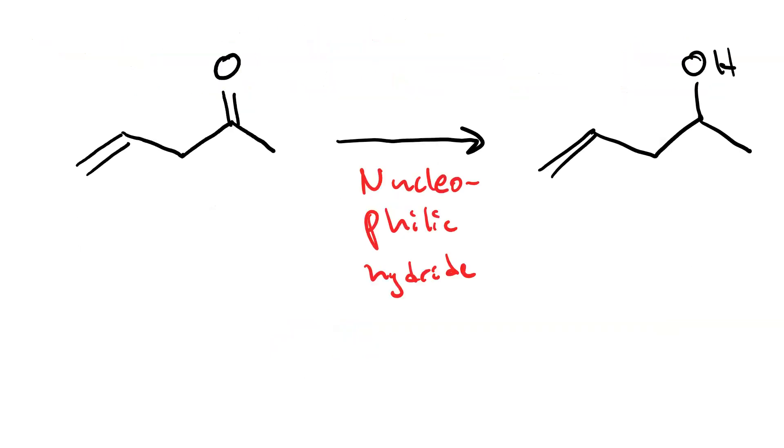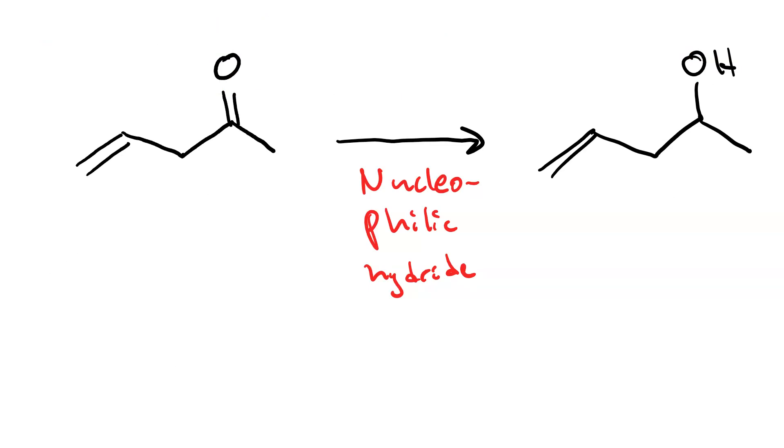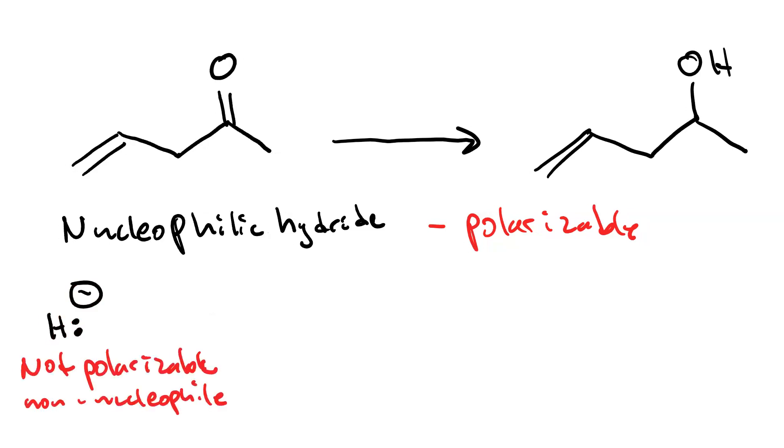To make this happen, we need a nucleophilic hydride. To be nucleophilic, you've got to be polarizable. A plain old hydride ion - that's just a hydrogen with two electrons - is not polarizable, because that hydrogen 1s orbital is so small and not easily deformed. What we really need is something that can supply a hydride but has a more polarizable electron cloud. Consider sodium borohydride. Now the electron cloud is a molecular orbital based on boron - more easily deformed than just a hydrogen 1s orbital. And now it's capable of performing nucleophilic attack.